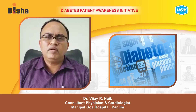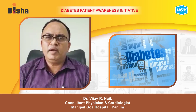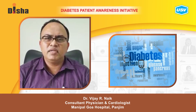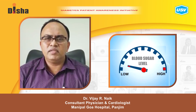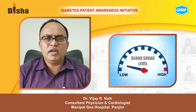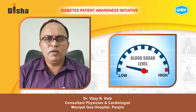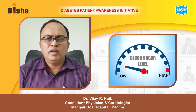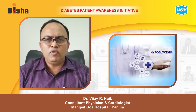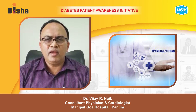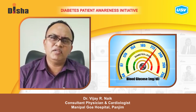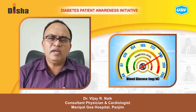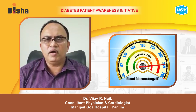Today we will speak about diabetic emergencies. There are two diabetic emergencies: one arising out of low blood sugar, which is called hypoglycemia, and one which is because of high blood sugar that can also cause coma.